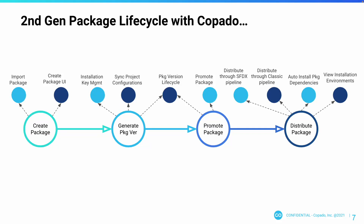Today we are talking about how we can manage the lifecycle of a second generation package using Copado. With Copado, you get many functionalities to manage your second generation packages, starting from creating a package itself. You can create a second generation Salesforce package through the Copado user interface, or you can import an existing package that you might have created before using Copado through the Copado CLI. After you have imported it, going forward, you can manage it through the Copado UI.